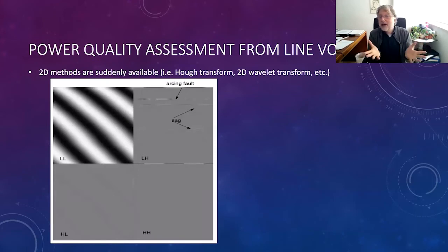So 2D methods are now available to us. We can do a Hough transformation for defining the tilts, or we can do two-dimensional wavelet transforms to perform vertical and horizontal high-pass filtering to come up with the corresponding features. As we see here, the arcing faults and the sags are now visible. So in the one-dimensional version, they were not very much visible.